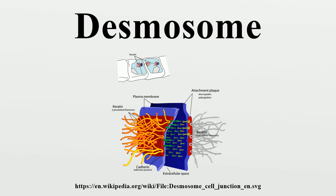Two other desmosomal cadherins on the adjacent cell both have five extracellular domains and have calcium-binding motifs. The extracellular domain of the desmosome is called the extracellular core domain and is bisected by an electron-dense midline where the desmoglein and desmocollin proteins bind to each other. These proteins can bind in a W, S, or lambda manner.